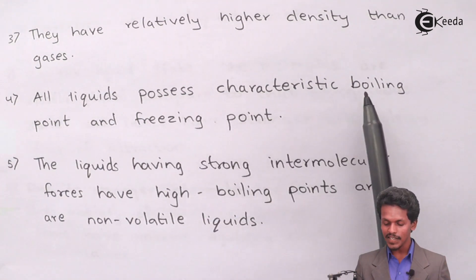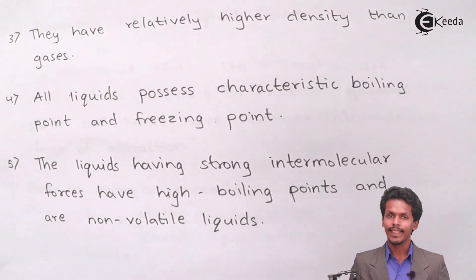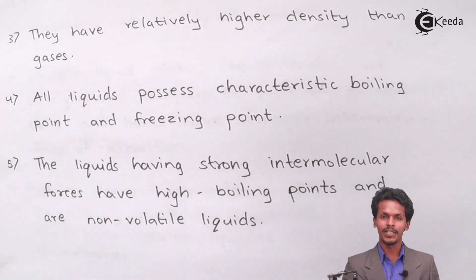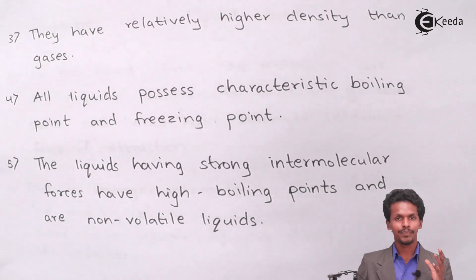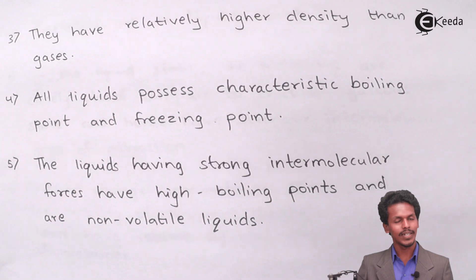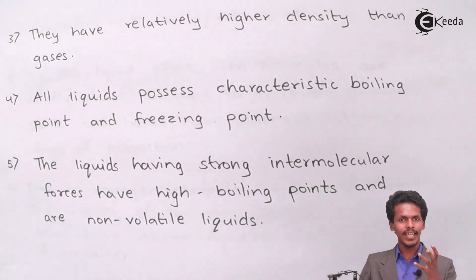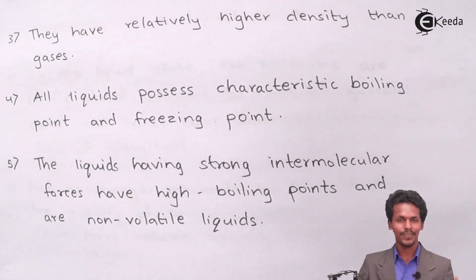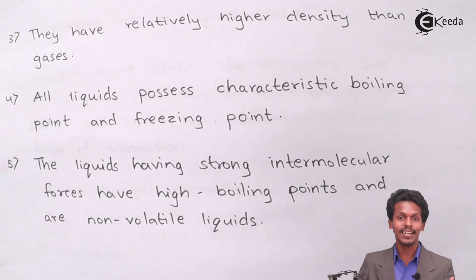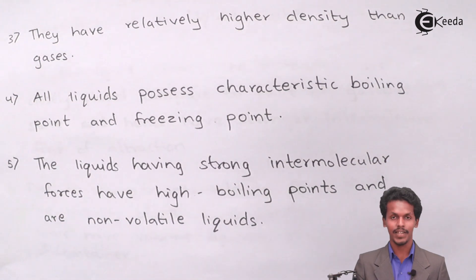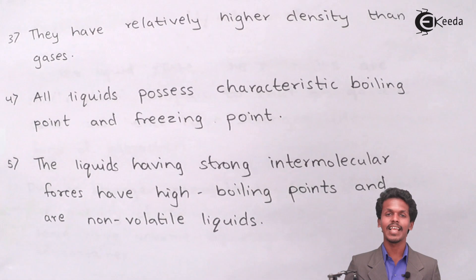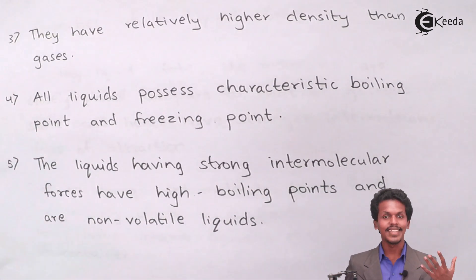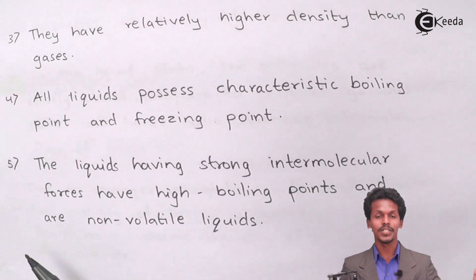Fourth: all liquids possess characteristic boiling points and freezing points. The boiling point and freezing point are characteristic properties of a particular liquid. For example, water has a boiling point of 100°C and a freezing point of 0°C. Whenever we say a liquid with a freezing point of 0°C, we immediately think of water. These characteristic values help us identify a liquid.